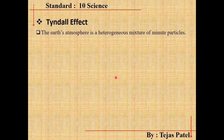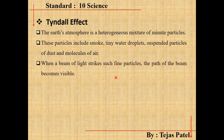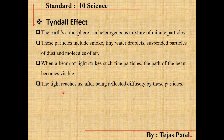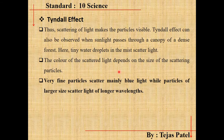The Earth's atmosphere is a mixture of many particles, including gases, dust particles, water droplets, smoke, tiny water droplets, suspended particles of dust, and molecules of air. Whenever a beam of light strikes such fine particles, the path of the beam becomes visible, as seen in the figure. The light reaches us after being reflected and diffused by these particles, and this phenomenon is known as the Tyndall effect.